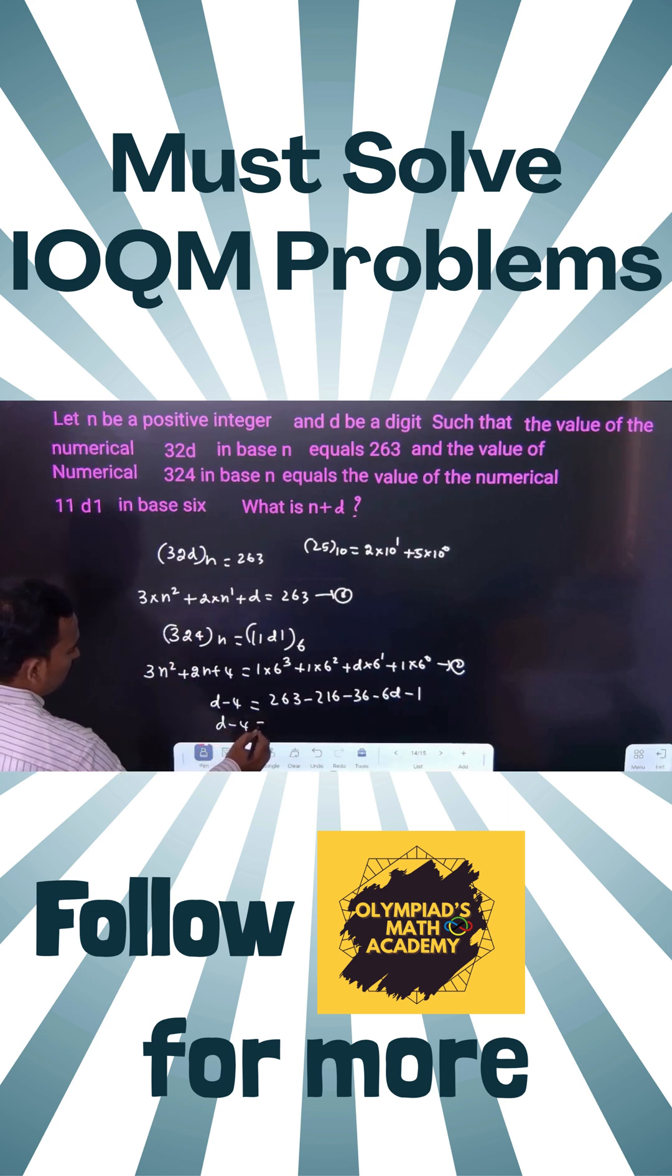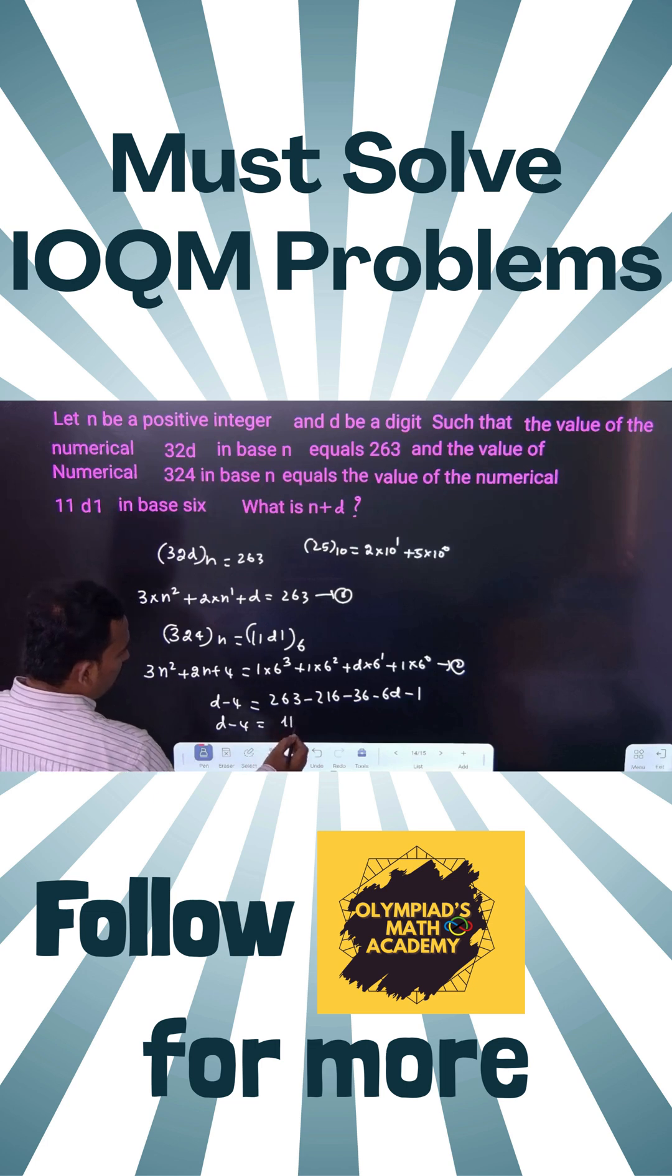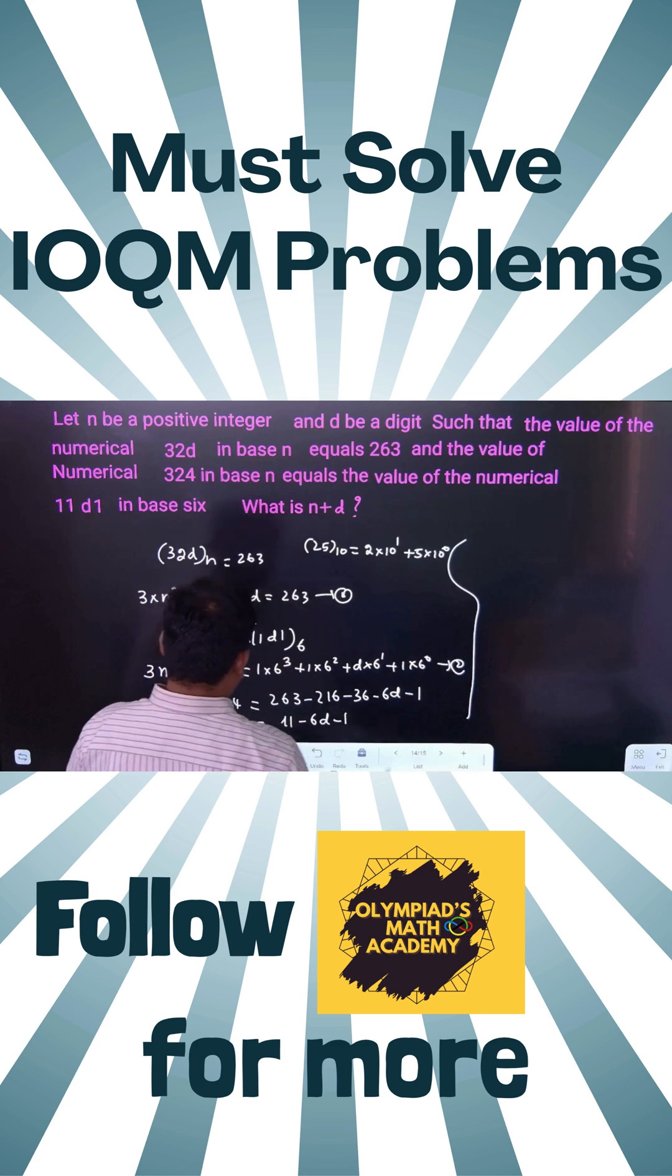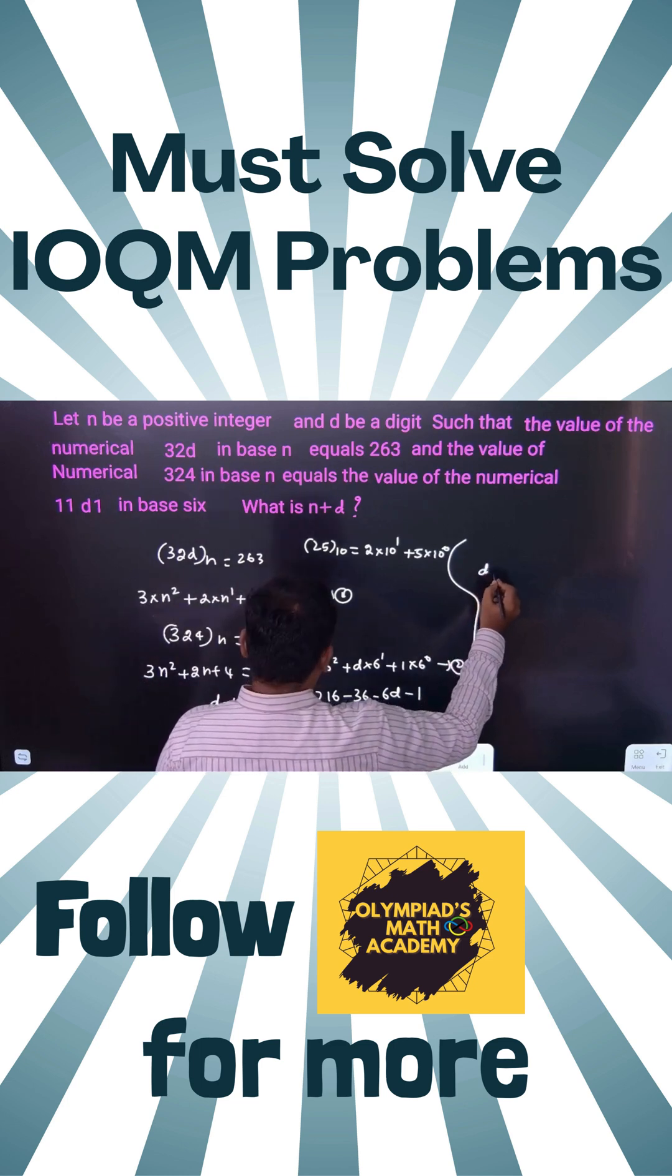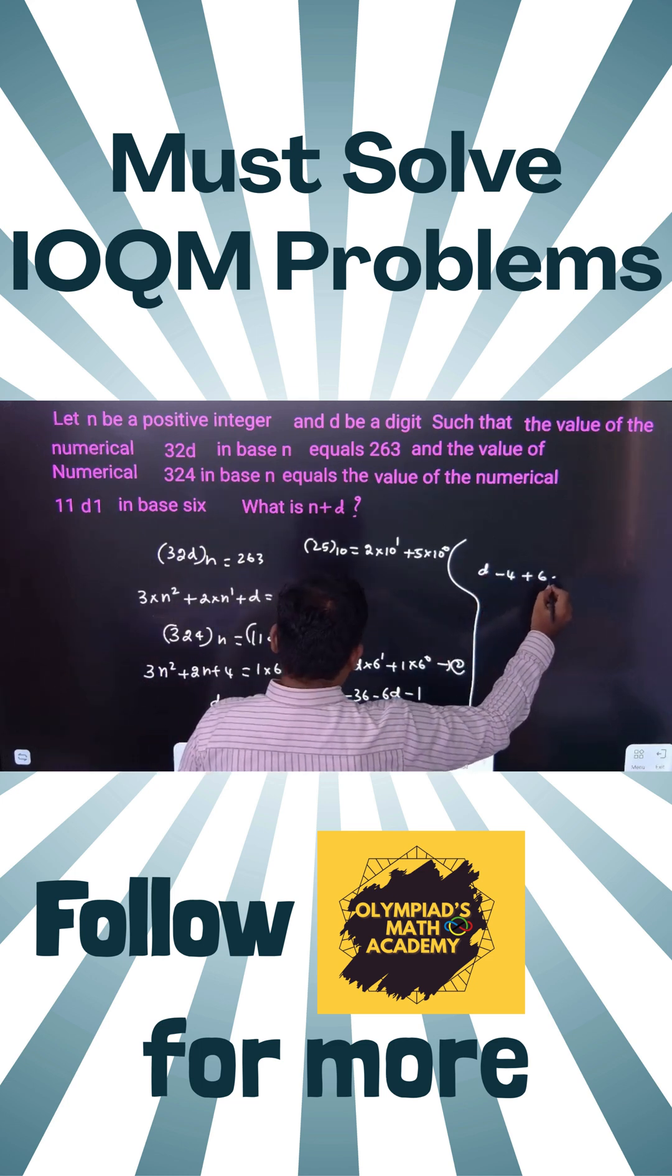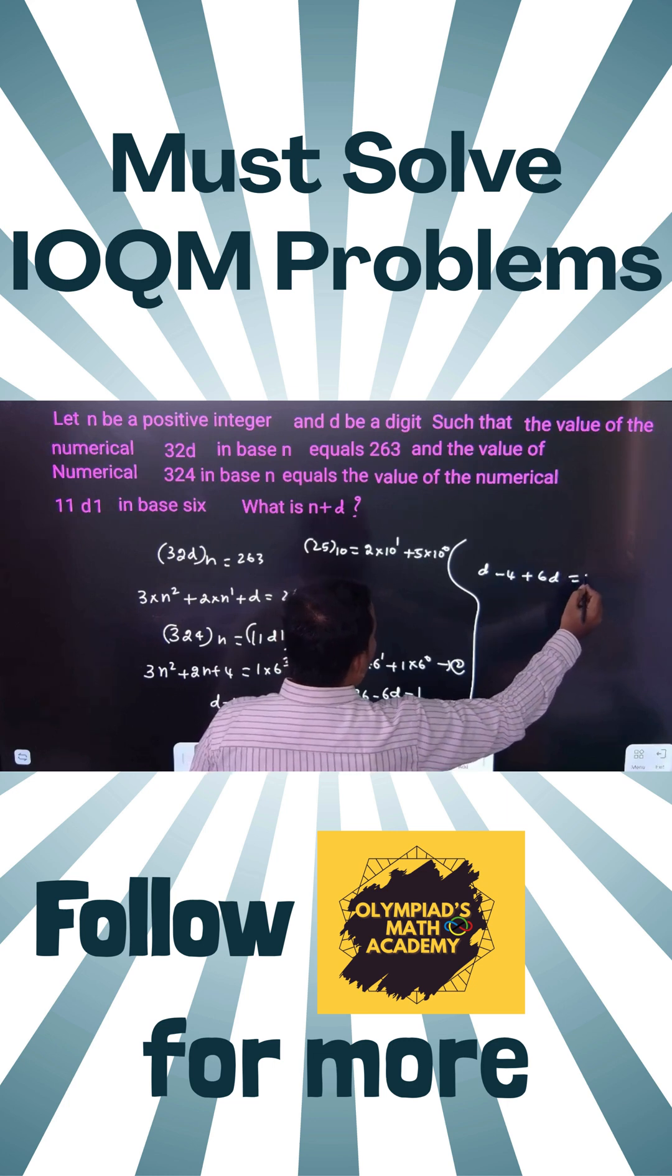So d minus 4 equals 263 minus 252, which is 11, minus 6d minus 1. Therefore d minus 4 plus 6d equals 10.